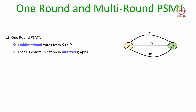There are two variants of the PSMT problem. A one round PSMT protocol operates in a scenario where the wires are unidirectional from sender to receiver — only the sender can communicate to the receiver and backward communication is not possible. This models communications in directed graphs, for instance where a sender is a base station that can only broadcast to receiving parties. In such models we can only design a one round PSMT protocol, which is a single shot protocol with one round of communication from sender to receiver.